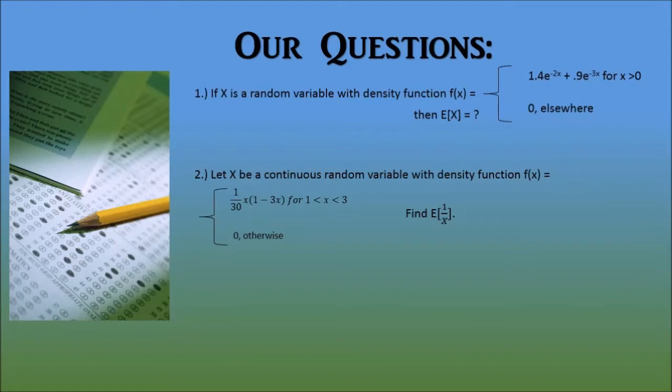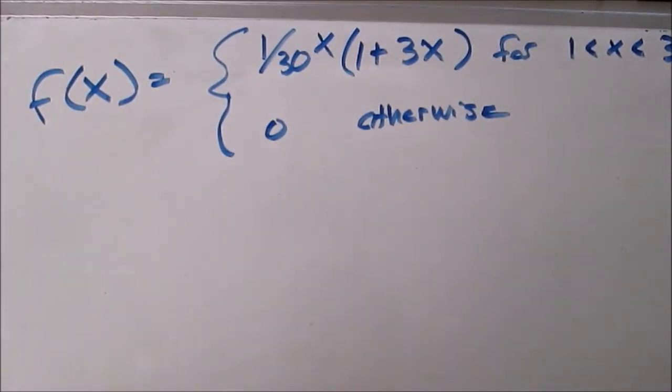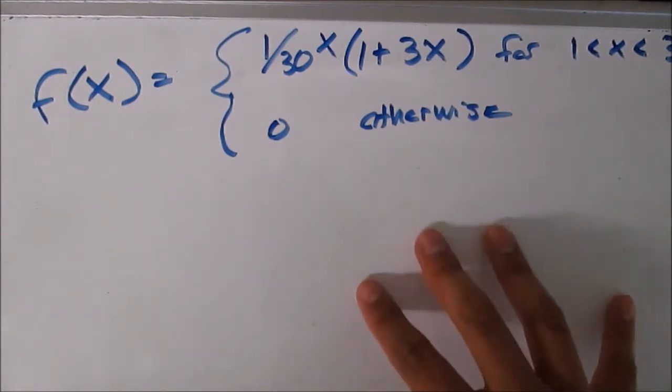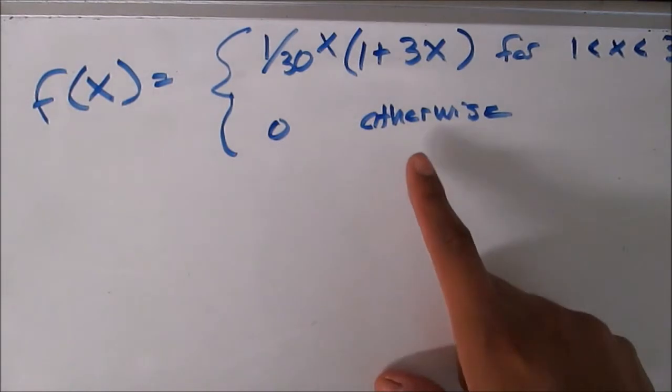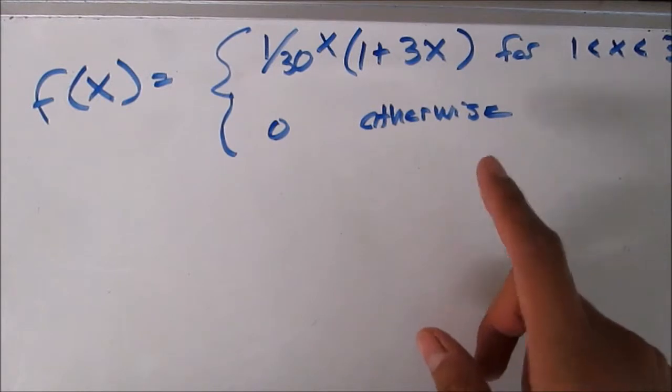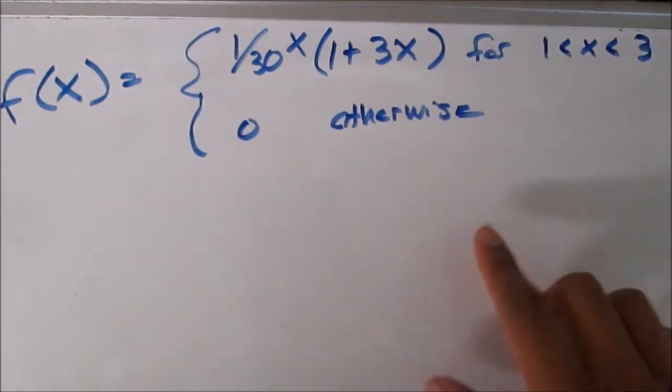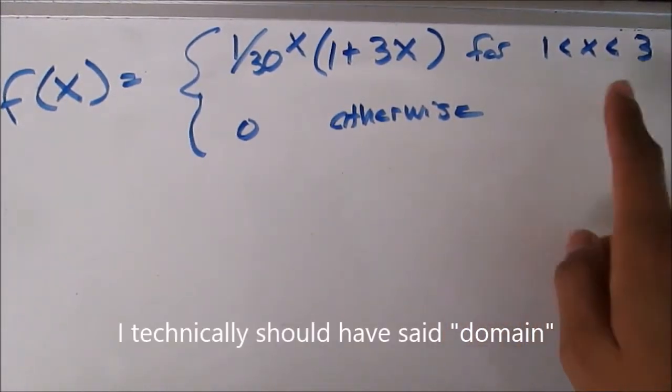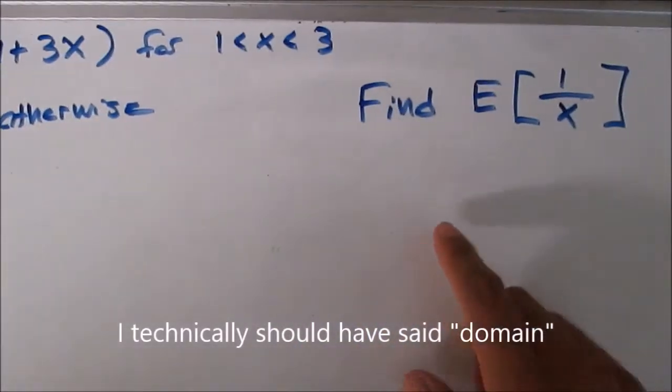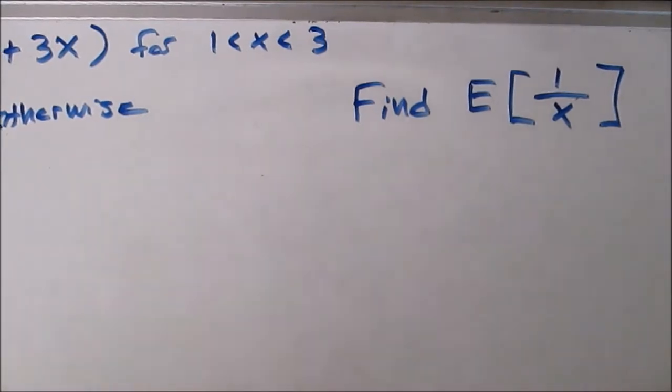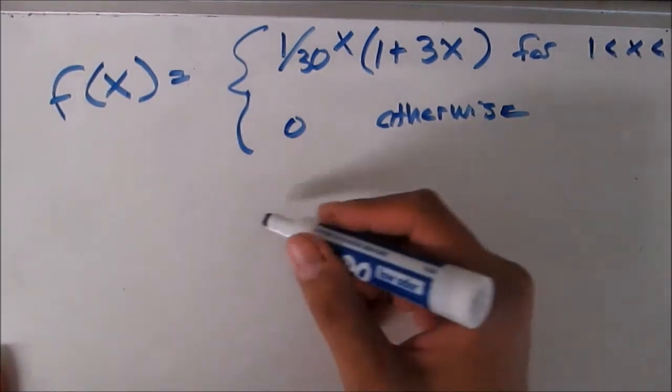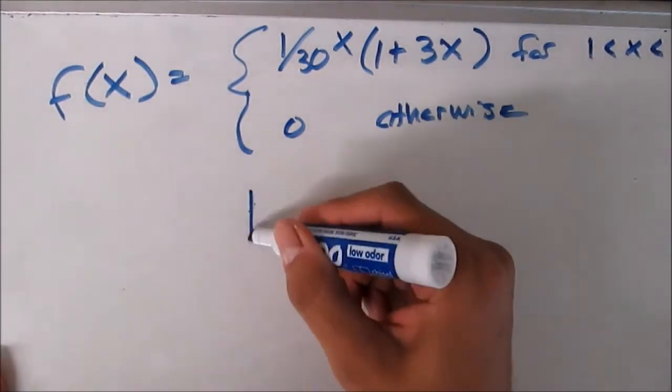Let's get started. All right, so here's our function. We have our probability density function right here. So it says that the equation is 1 over 30 x times 1 plus 3 x for the range from 1 to 3 x. And what it's asking for is to find the expected value of 1 over x. So let's first review what exactly is the formula for expected value.